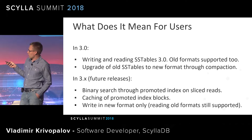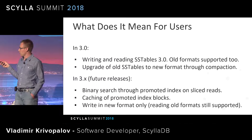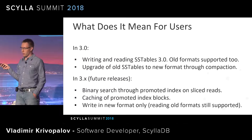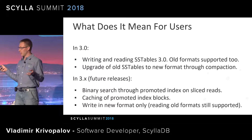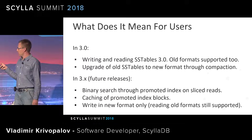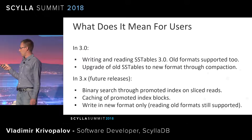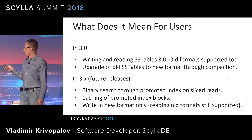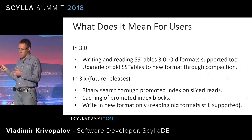Here is the brief roadmap. In 3.0, we support writing and reading SSTable 3.0, and all old formats are supported too. We support upgrading old SSTables to the new format through compaction — once the entire cluster supports the new format, new files are written in the new format and old files gradually transition through compaction. In future releases, we will support binary search through the promoted index on sliced reads, caching of promoted index blocks for better performance on wide partition reads, and eventually we will cease writing in the old format, though we will still read from it.